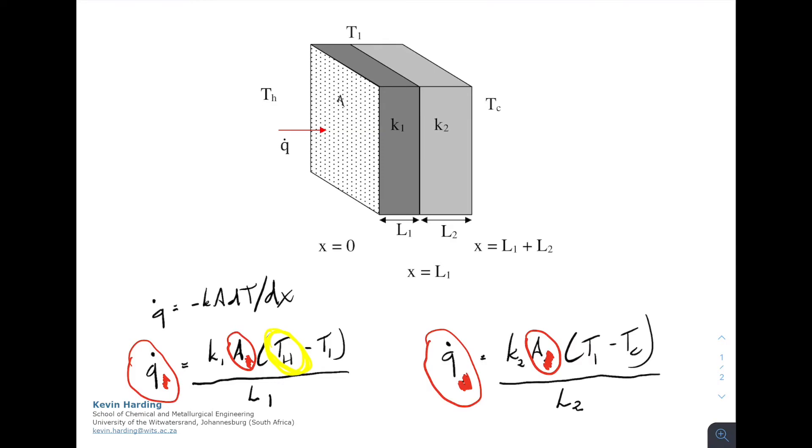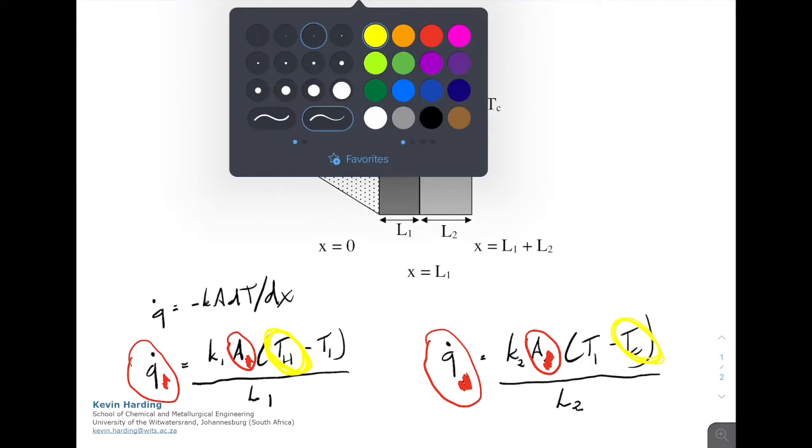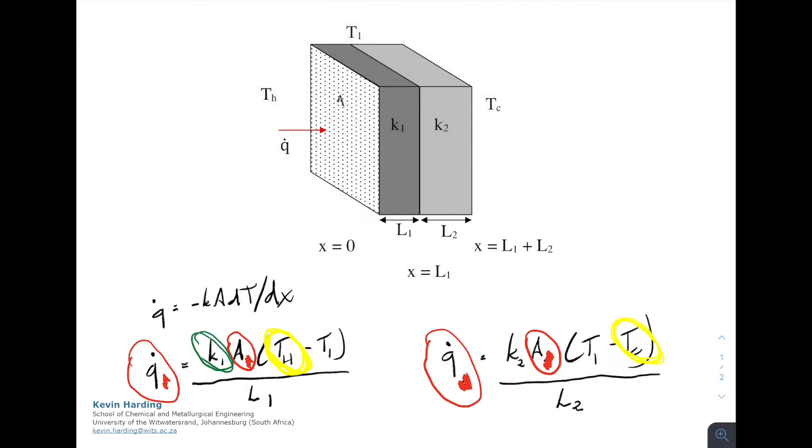Which terms are you typically given? Temperature hot and cold can be measured with a thermometer or thermocouple, so you'll be given T hot and T cold. As a good engineer, you can look up K1 and K2 in textbooks. L1 and L2 you'll almost always be given. The two unknowns are Q and temperature one. With two equations and two unknowns, we can solve this.